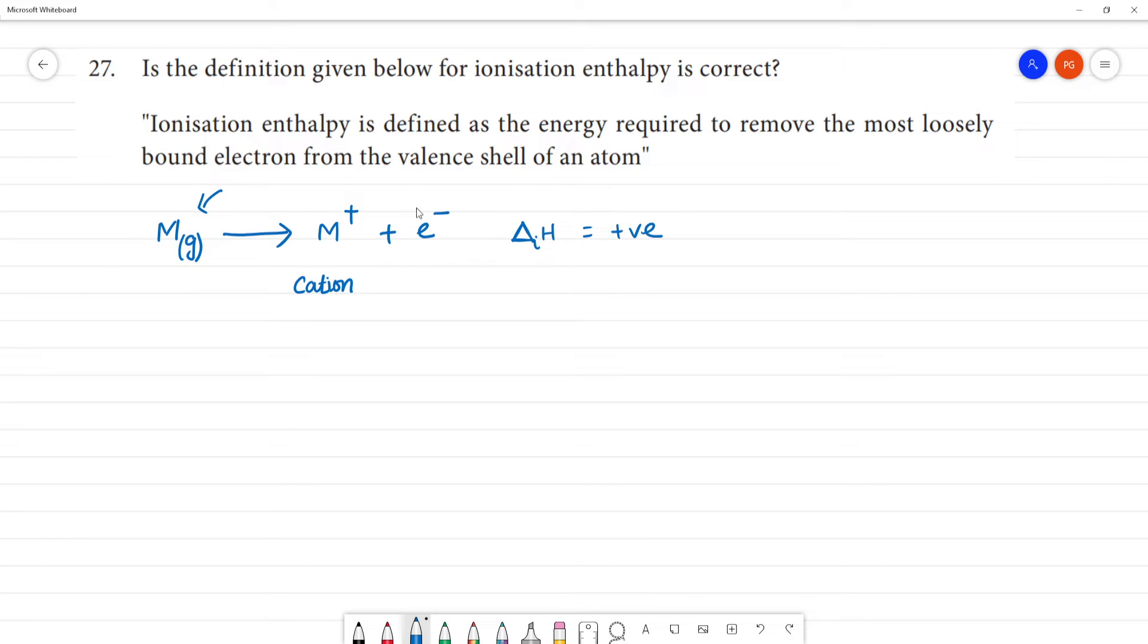Clear? So in this case, ionization enthalpy is defined as the minimum energy we are supplying.